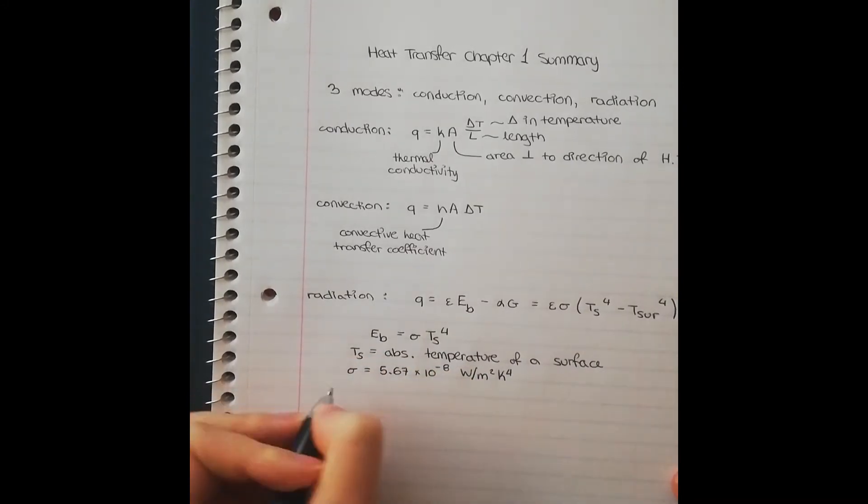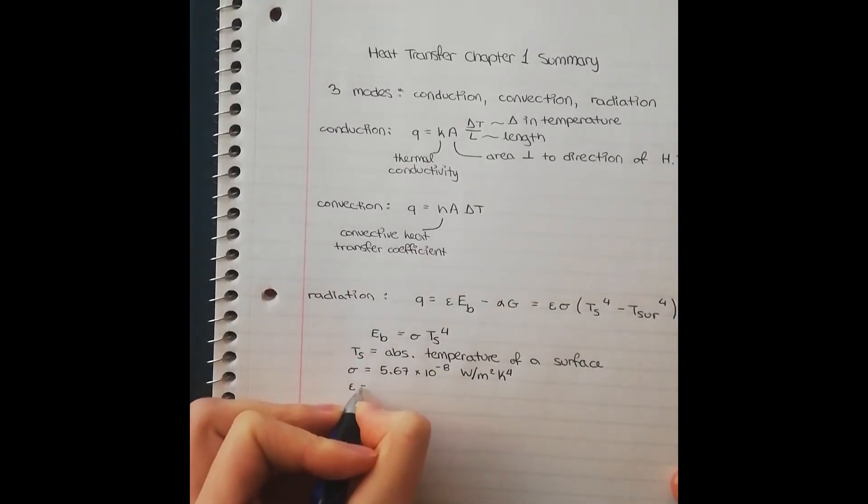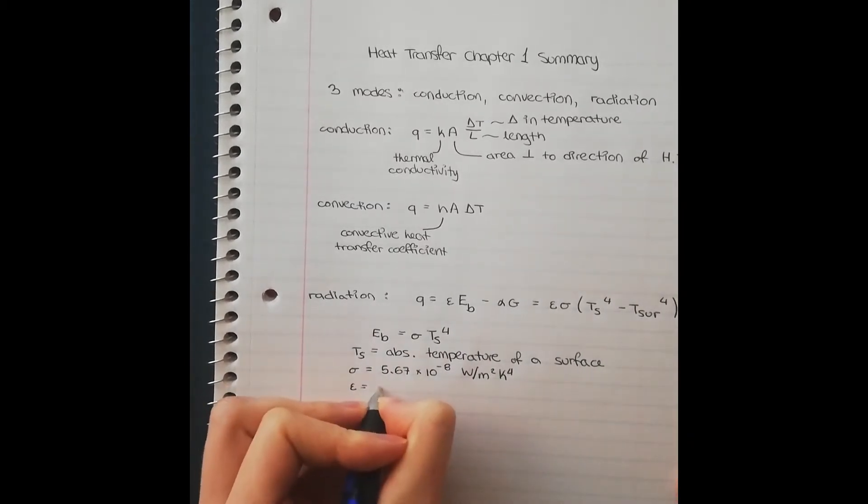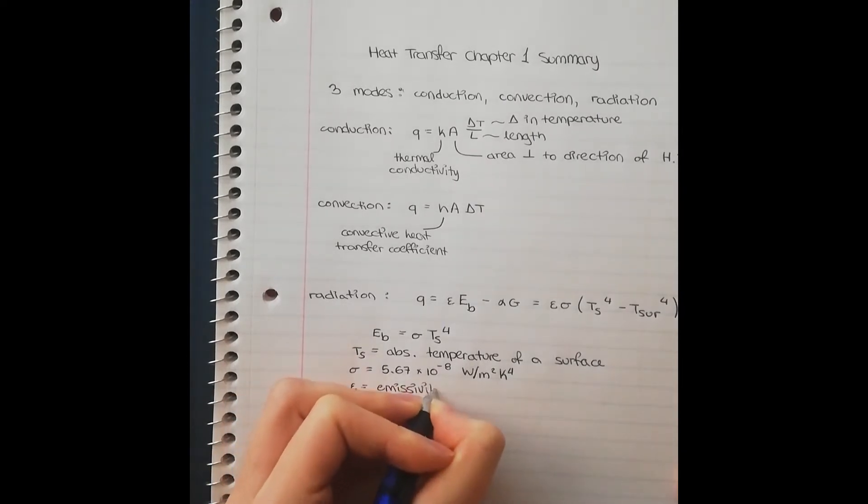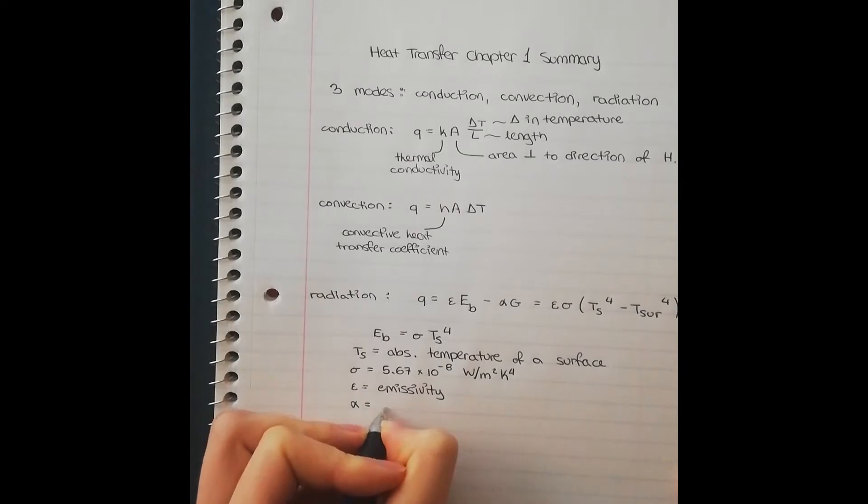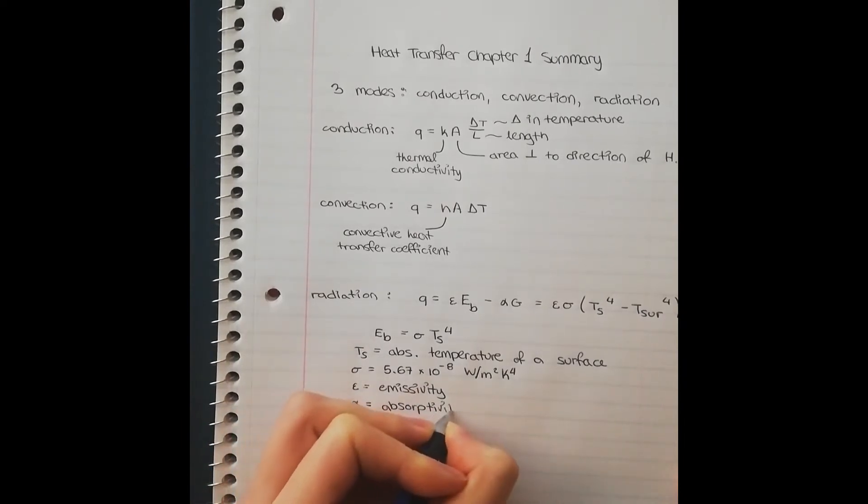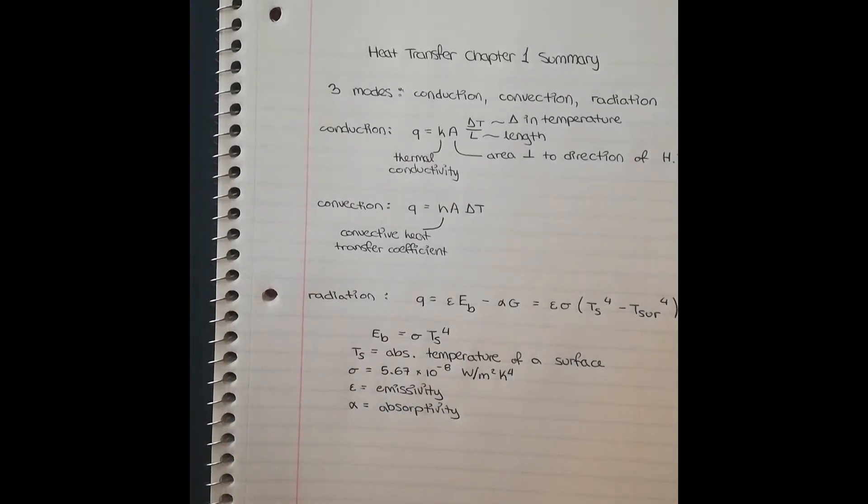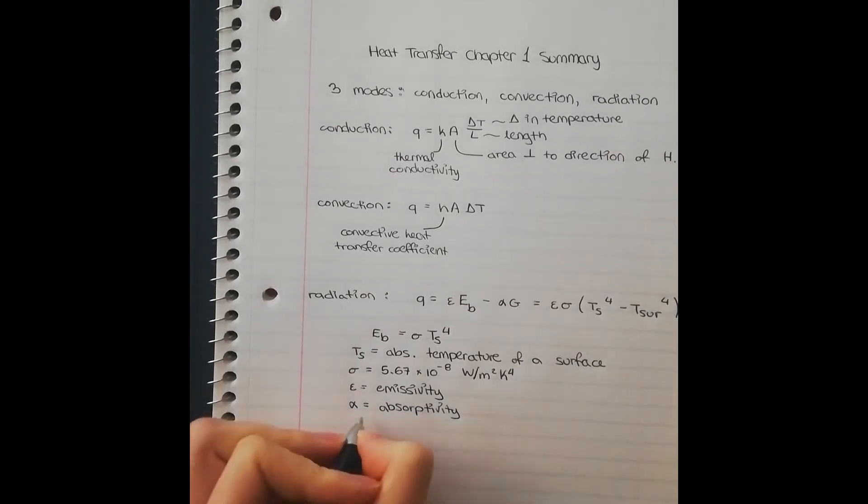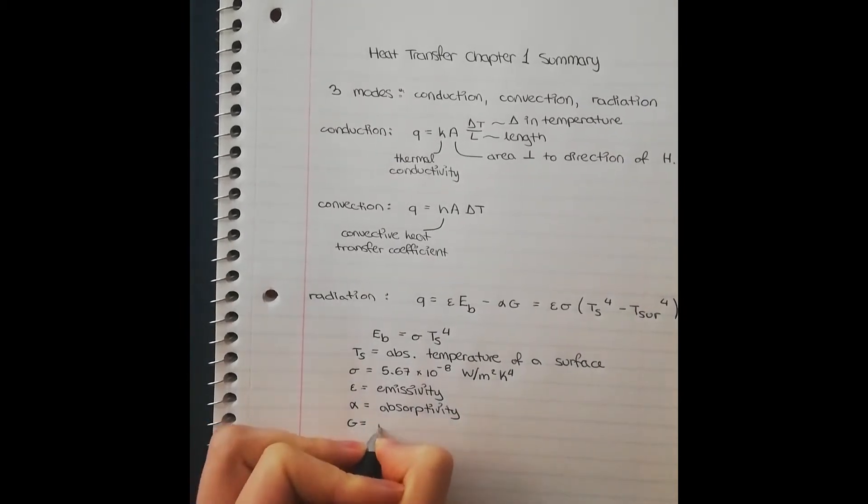Next, we'll talk about Epsilon. Epsilon is called the emissivity. Essentially, it is how effectively a surface emits energy relative to a black body. Alpha is the absorptivity. So this means the rate at which radiant energy is absorbed. G is irradiation. Rate at which radiation is incident on a unit area.